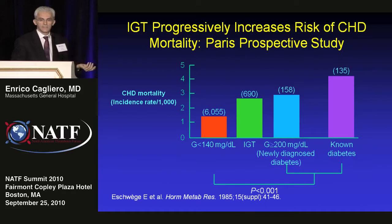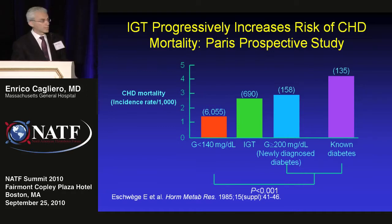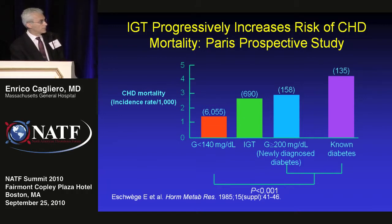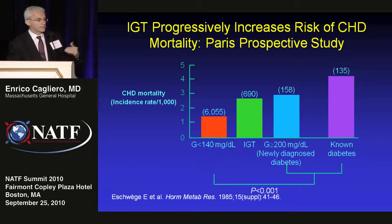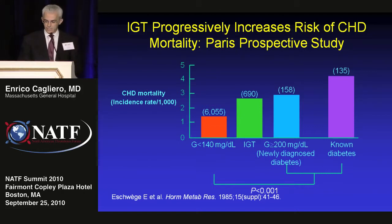The Paris Prospective Study divided patients based on glucose category — normal glucose tolerance in orange, non-diabetic, and those with impaired glucose tolerance or newly diagnosed diabetes. Again, the higher the glucose, the higher the cardiovascular mortality.